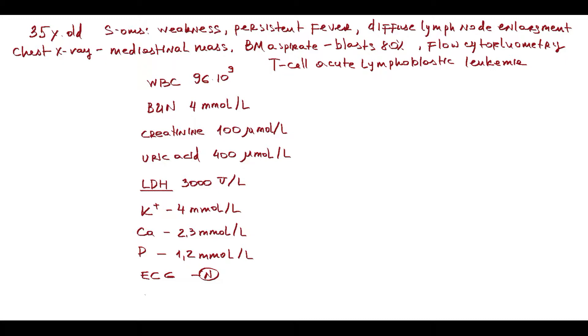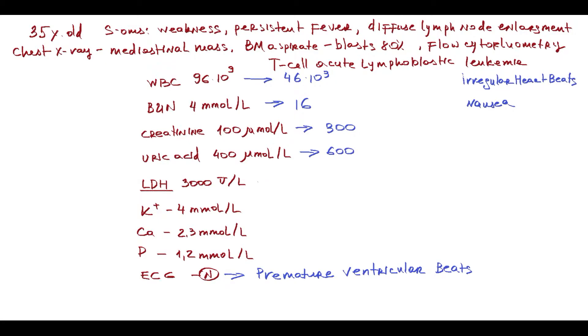When chemotherapy was given, on the next day, the patient felt unwell and complained of irregular heartbeat and nausea. ECG shows premature ventricular beats. Leukocyte count substantially decreased from 96,000 to 46,000. Blood urea nitrogen increased from 4 to 16. Creatinine increased by 3 times. Uric acid became substantially higher.